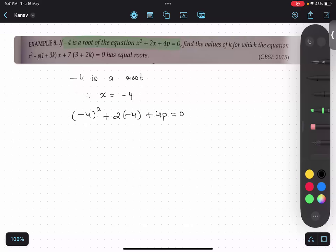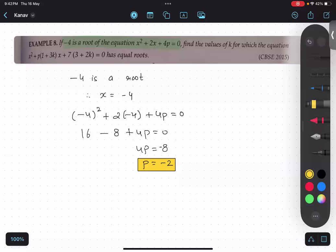Quickly tell me what is the answer for this thing. So after substituting, we got p value as minus 2. Now after that, the question asks us find the value of k.